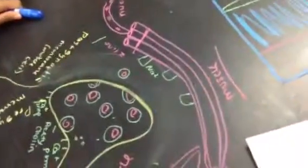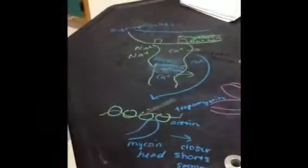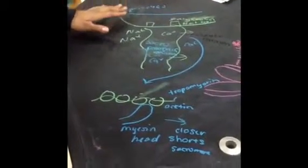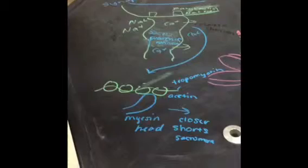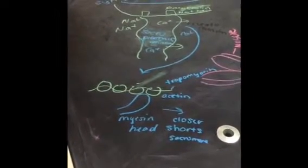Now we'll talk about what happens when the signal comes into the muscle cell. The acetylcholine attaches to the sodium receptors and causes sodium to release into the cell. This triggers calcium to release from the sarcoplasmic reticulum.